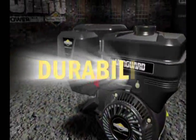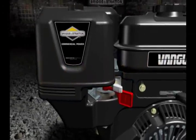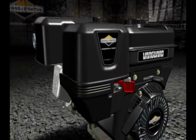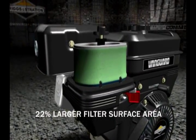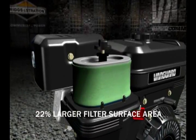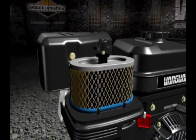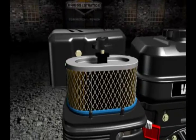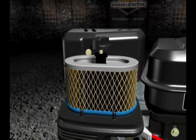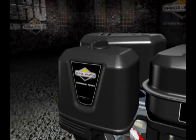Durability starts with clean air, so we developed a new canister-style high-mounted air cleaner with 22% more filter area than competitive filters. Our new filter is water-repellent, protected by a full metal cage, and features an innovative triple-seal design that keeps out dirt, dust, and debris.